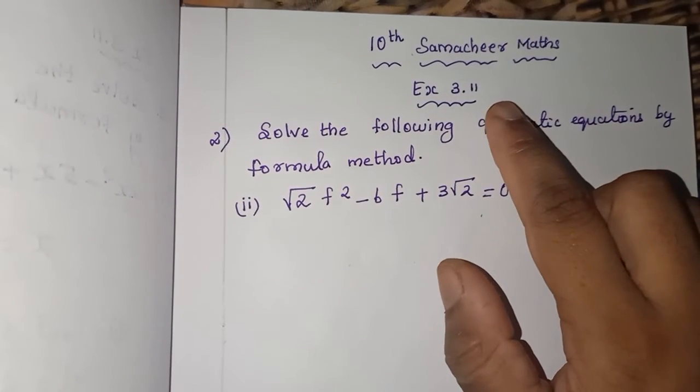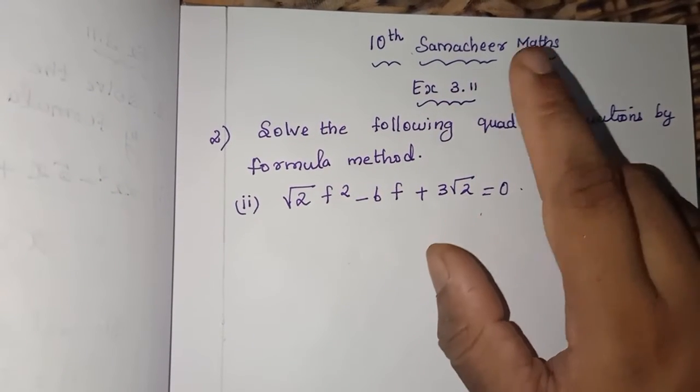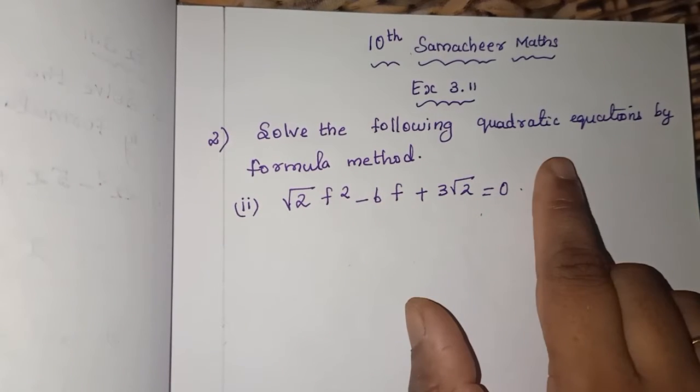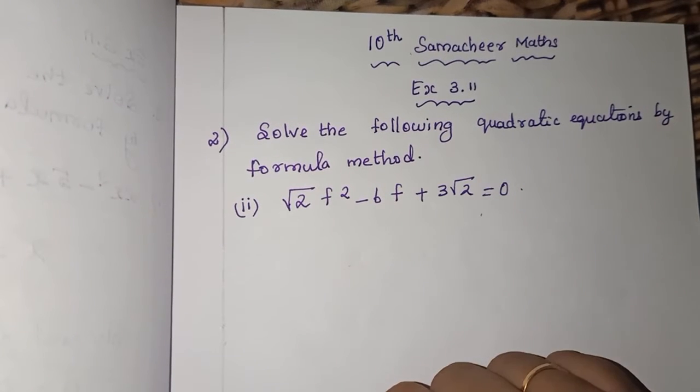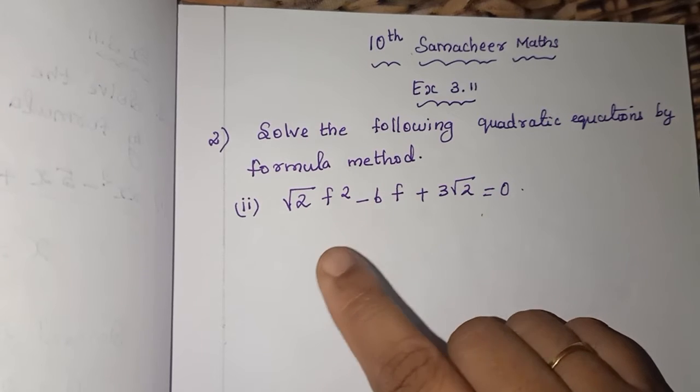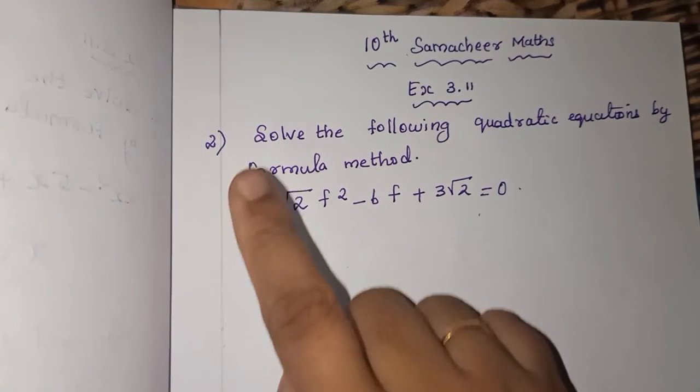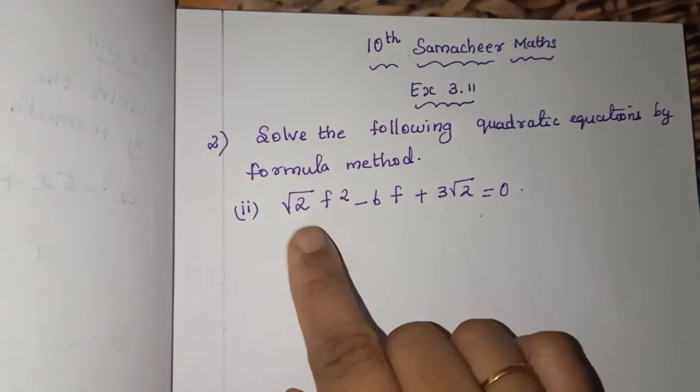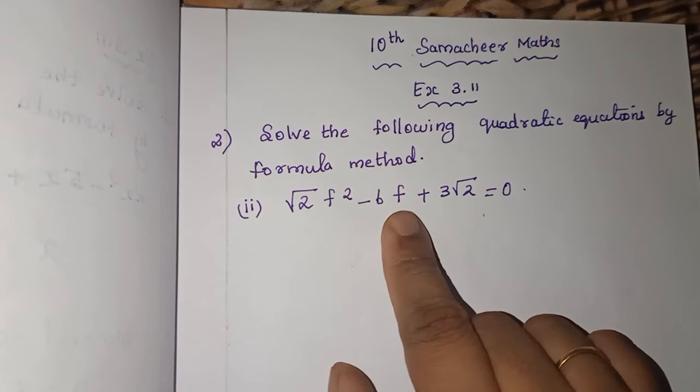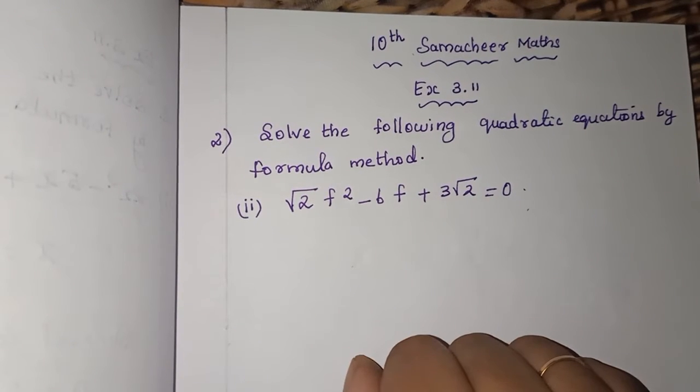Students, today we are going to see 10th Samacheer Maths, Exercise 3.11. Solve the following quadratic equations by formula method. We have already seen one sum, the first subdivision. Here is the second subdivision: √2f² - 6f + 3√2 = 0.